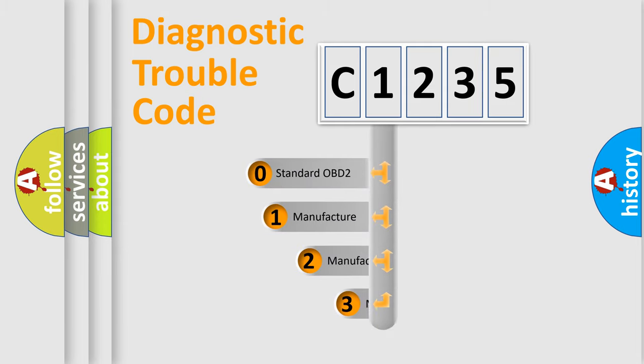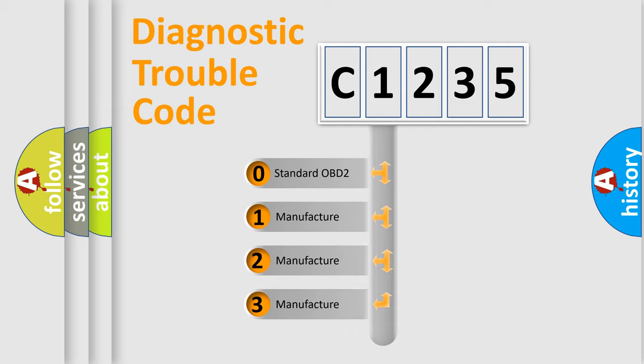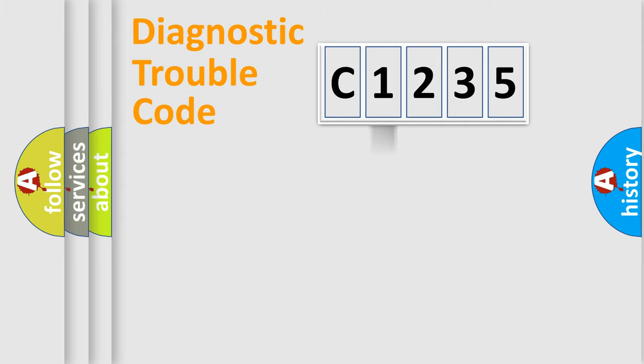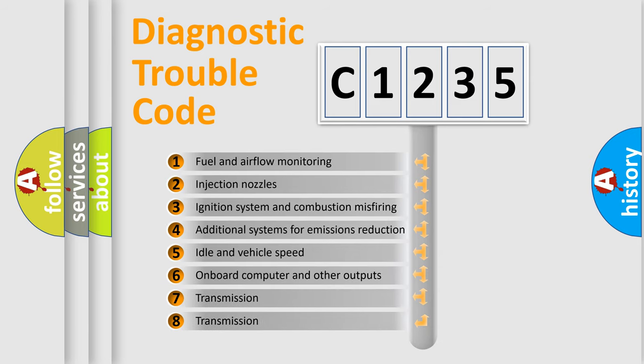This distribution is defined in the first character code. If the second character is expressed as zero, it is a standardized error. In the case of numbers 1, 2, 3, it is a more prestigious expression of the car specific error.